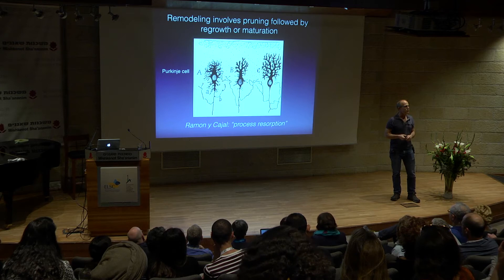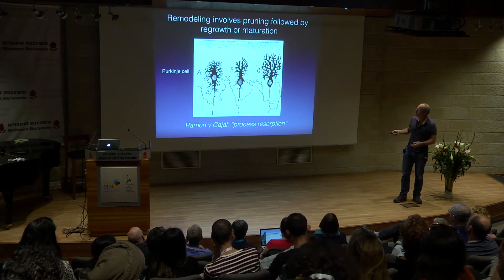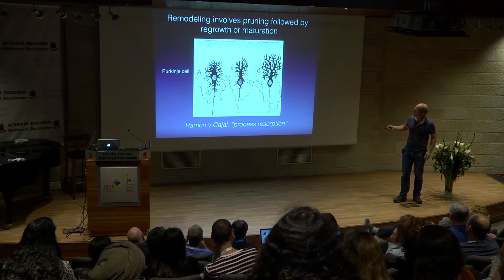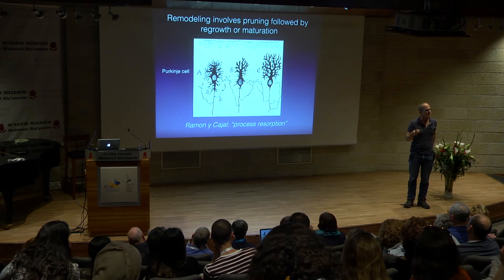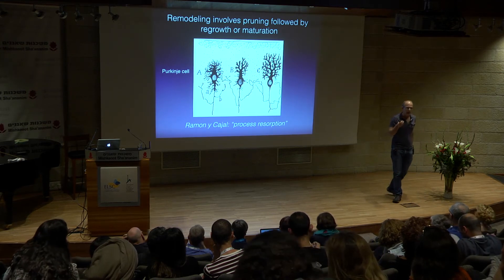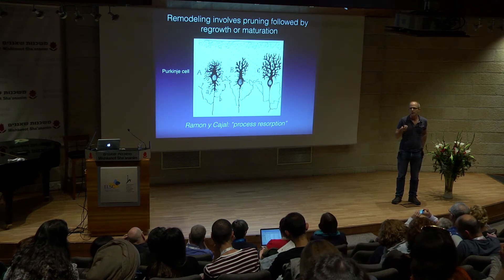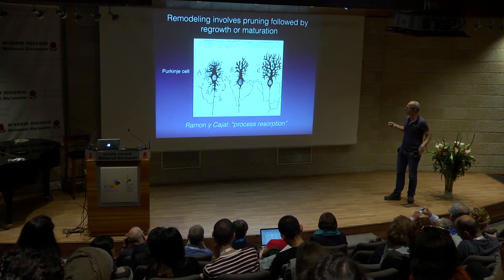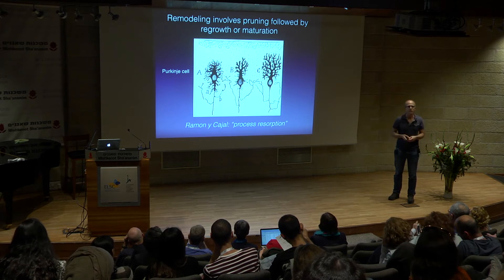Over the last few years, there have been many hypotheses suggesting that defects in neuronal remodeling might have a basis for neuropsychiatric diseases such as autism, schizophrenia, and others. But one of the reasons we don't really have a good causal link is because we don't really know the molecular basis for how neurons undergo pruning of these branches and regrowth of these branches.